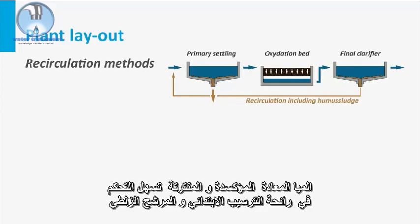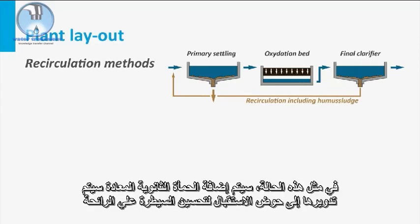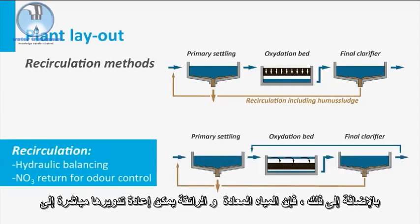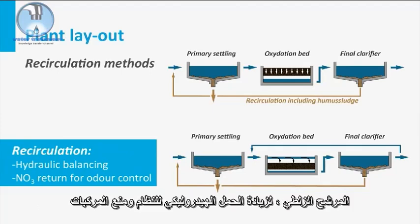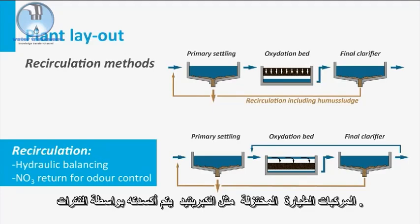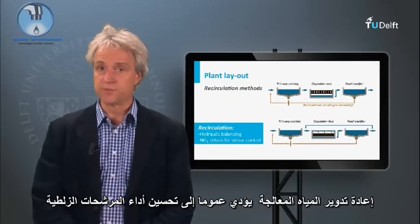The oxidized and nitrified effluent facilitates odor control in the primary clarifier and the trickling filter. When connected to a gravity sewer, the primary clarifier is preceded by an influent reception basin. In such case, the recycled secondary sludge will be added to the reception basin for enhanced odor control. Additionally, the nitrified and clarified effluent might be directly recycled to the trickling filter to increase the hydraulic loading to the system and to prevent volatile odorous compounds escaping the filter system. Reduced volatile compounds such as sulfides are then oxidized by nitrate. Effluent recirculation generally leads to improved process performance of the trickling filter.